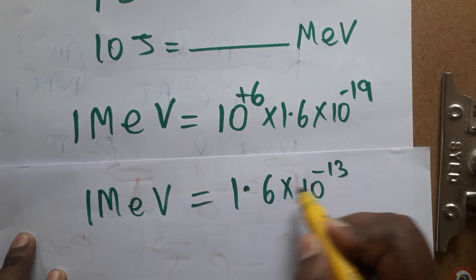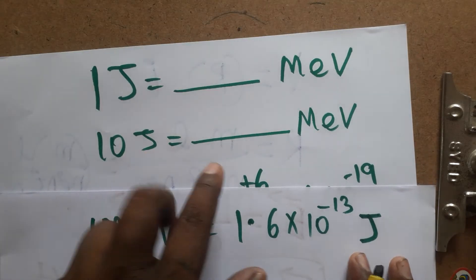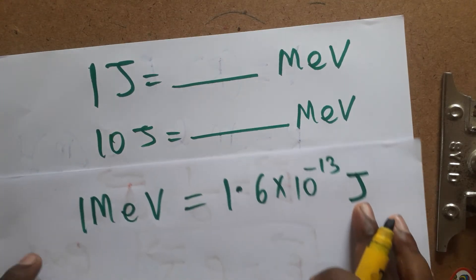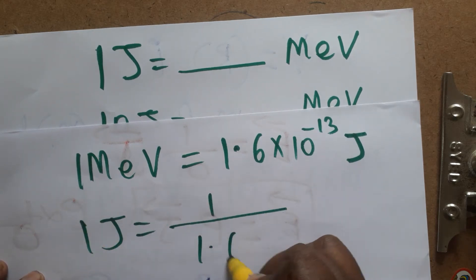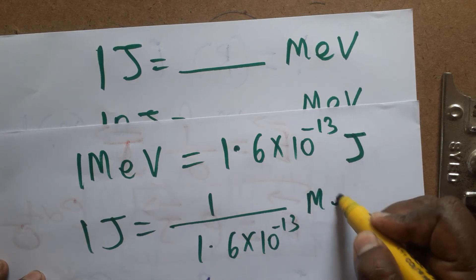Because it's plus 6 minus 19, we'll get as a minus 13 joules. Okay, now our question is 1 joule is dash MeV, how to convert? Okay, so 1 joule is equal to 1 divided by 1.6 into 10 power minus 13 MeV.